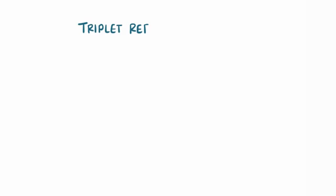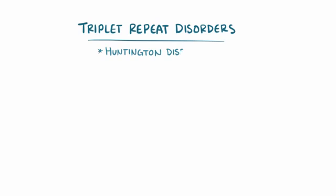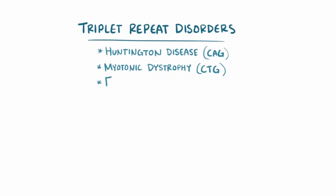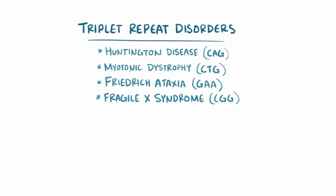There are actually several dozen other triplet repeat disorders in addition to Huntington disease. Some also have CAG as the repeated nucleotides but in a different gene, while others have different repeats — like myotonic dystrophy, which is a CTG repeat; Friedreich ataxia, a GAA repeat; and Fragile X syndrome, a CGG repeat.